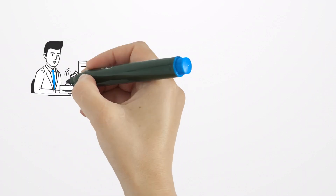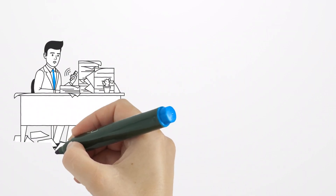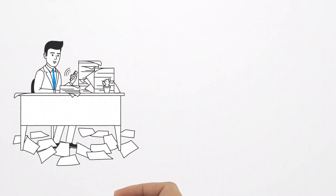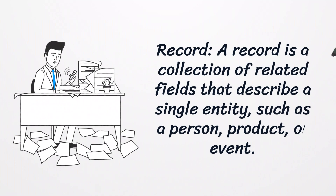Record. A record is a collection of related fields that describe a single entity, such as a person, product, or event.